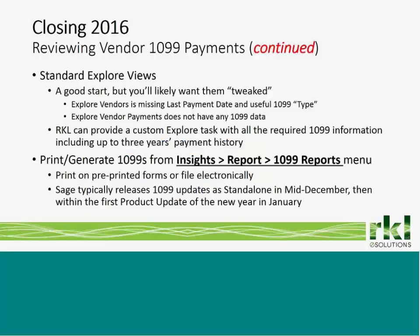There are a couple of Explore views available to get some — but not all — of your 1099 data. You have Explore Vendors and Explore Vendor Payments Business Insights Explore Views, but each is missing pieces of the puzzle. Explore Vendors doesn't track last payment date or 1099 type; Explore Vendor Payments has no 1099 data. If you want to validate your data with a BIE view, reach out to us. We've provided several clients with custom Explore tasks that combine all 1099 payment data in a single view with up to three years of payment history.